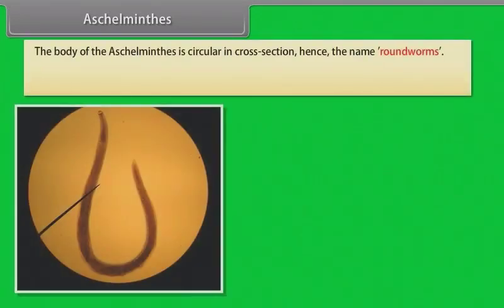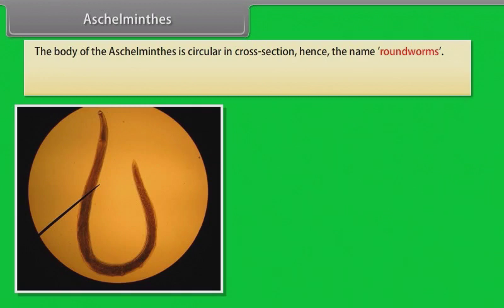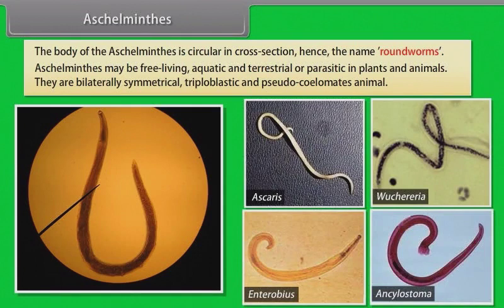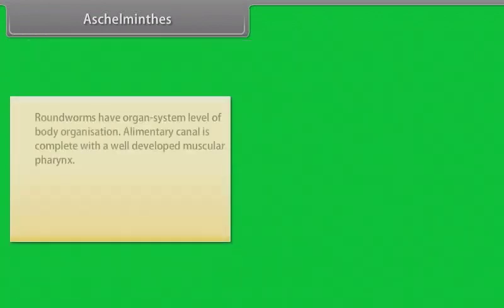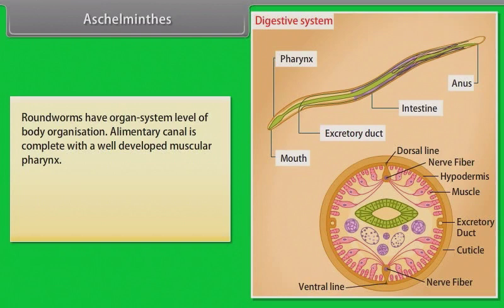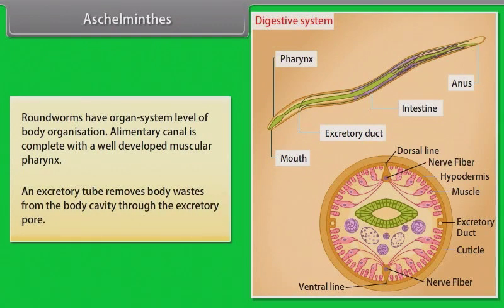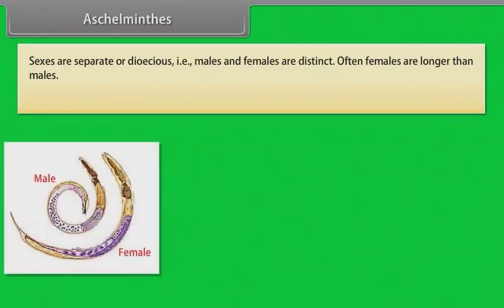The body of Aschelminthes is circular in cross-section, hence the name roundworms. Aschelminthes may be free-living, aquatic and terrestrial, or parasitic in plants and animals. They are bilaterally symmetrical, triploblastic and pseudocoelomate animals. Roundworms have organ system level of body organization. The alimentary canal is complete with a well-developed muscular pharynx. An excretory tube removes body waste from the body cavity through the excretory pore. Sexes are separate, that is dioecious — males and females are distinct.